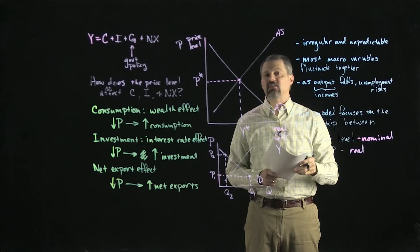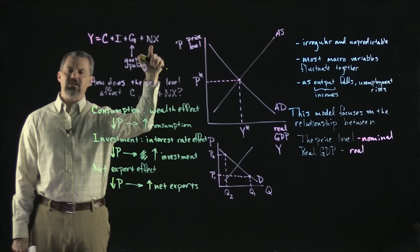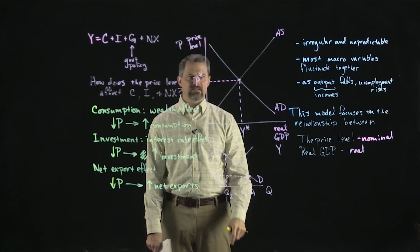So all three things — when the price level goes down, it causes consumption to go up, investment to go up, and net exports to go up. A decrease in the price level leads to an increase in the amount of stuff that firms, households, and other countries want to buy from us. That helps explain why the aggregate demand curve slopes downward.